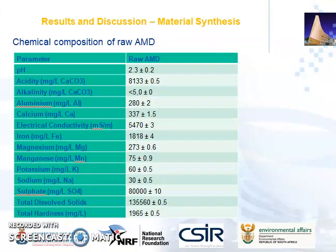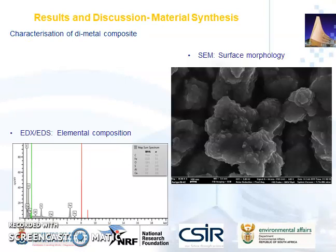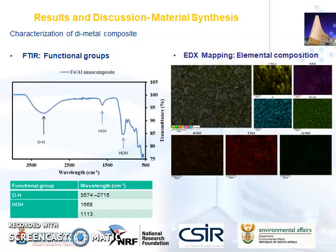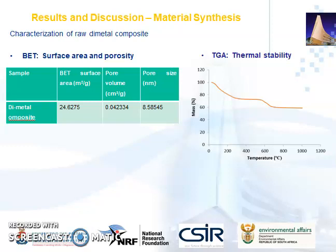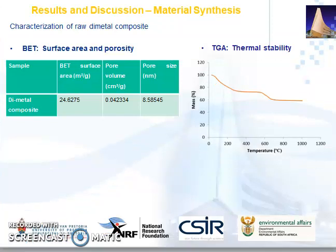As reflected in the table, AMD characterization results showed that the raw AMD is rich in iron, aluminum, manganese, and sulfate, making it viable for the recovery of iron and aluminum di-metal composite. SEM and EDX-EDS show the surface morphology and elemental composition of the recovered and synthesized di-metal composite respectively. From the elemental composition, we see the presence of iron and aluminum recovered from raw acid mine drainage. The FTIR shows the functional groups in the composite, including the presence of a hydroxyl group and water. The BET shows a surface area of 24.62 square meters per gram, while the TGA gives the thermal stability of the material.